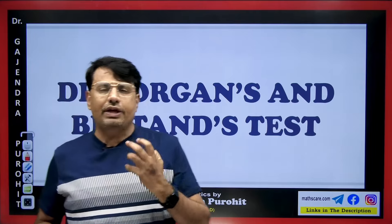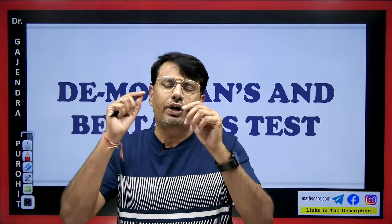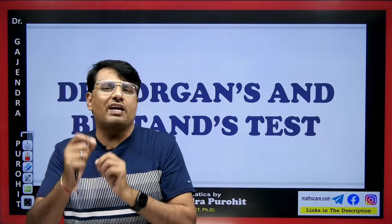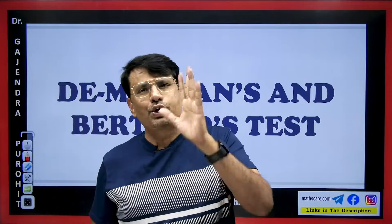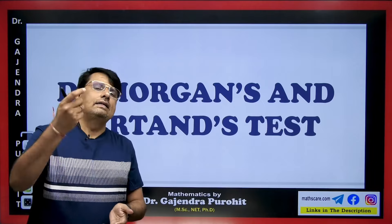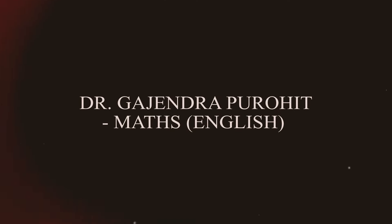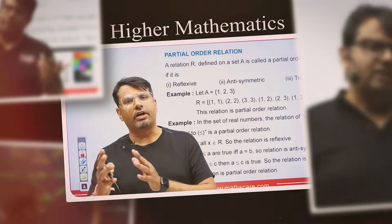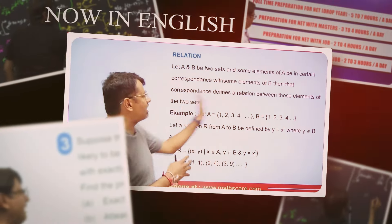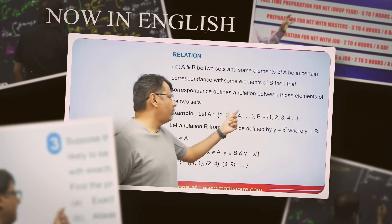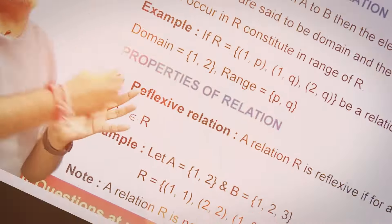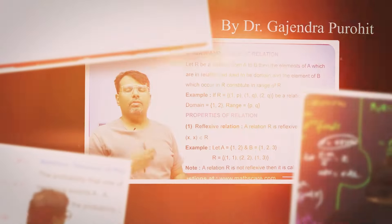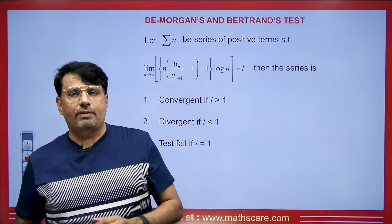Whenever the Rabbe test fails, we will use this test to determine whether the infinite series is convergent or divergent. Let's see how we will use this and what is its formula. So students, we will discuss DeMorgan's test.